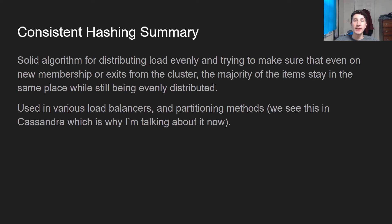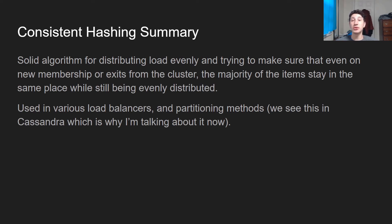The summary of consistent hashing is: it's a good algorithm for distributing load evenly amongst nodes in a cluster, and making sure that even on new membership or exits from that cluster, the majority of the items are staying in the same place and only a few of them are going to be rerouted to other nodes. It's a very popular algorithm for load balancers, and also very prevalent in Cassandra, which I'll be covering in a couple of videos. Consistent hashing is a really good way to make sure that you can distribute things not just evenly, but also in a way that they stay to relatively the same spot even as the size and members of the cluster change.